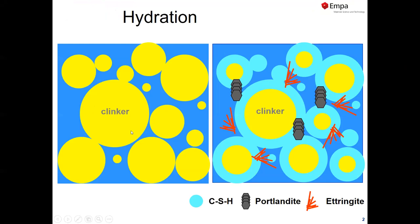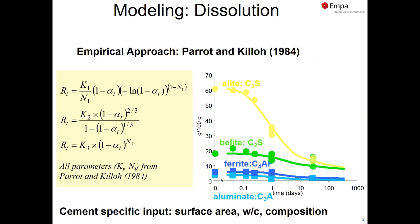If we look at the hydration of cements, before we start hydration we have unreacted clinker, we add solution to it, then the clinker starts to dissolve and we start to form a number of solids like ettringite, portlandite, and other phases or CSH. If we want to model this, we need a set of equations that describe the dissolution of the clinker phases, because as you know the dissolution of clinker phases is relatively slow. We have here in yellow the dissolution of alite, which continues maybe up for months and afterwards gets quite slow. Belite and ferrite are also relatively slow.